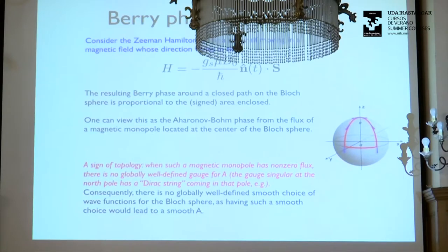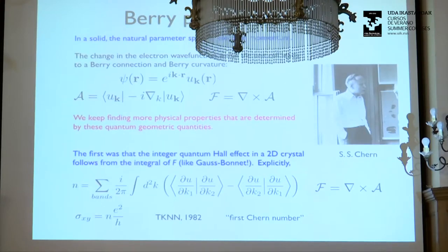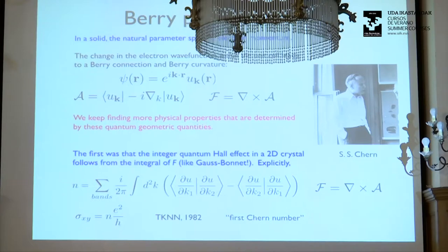A Berry phase can first be understood by thinking about a spin moving in a time-varying magnetic field — that's a good example worth working through. The first use of this kind of topology in condensed matter physics was the analysis of topological defects — vortices, skyrmions, and things like that, maybe in the 1970s. But the first use for electronic structure was the famous Thouless et al. paper: how do you understand the quantum Hall effect by taking the Kubo formula and doing enough manipulation on it?